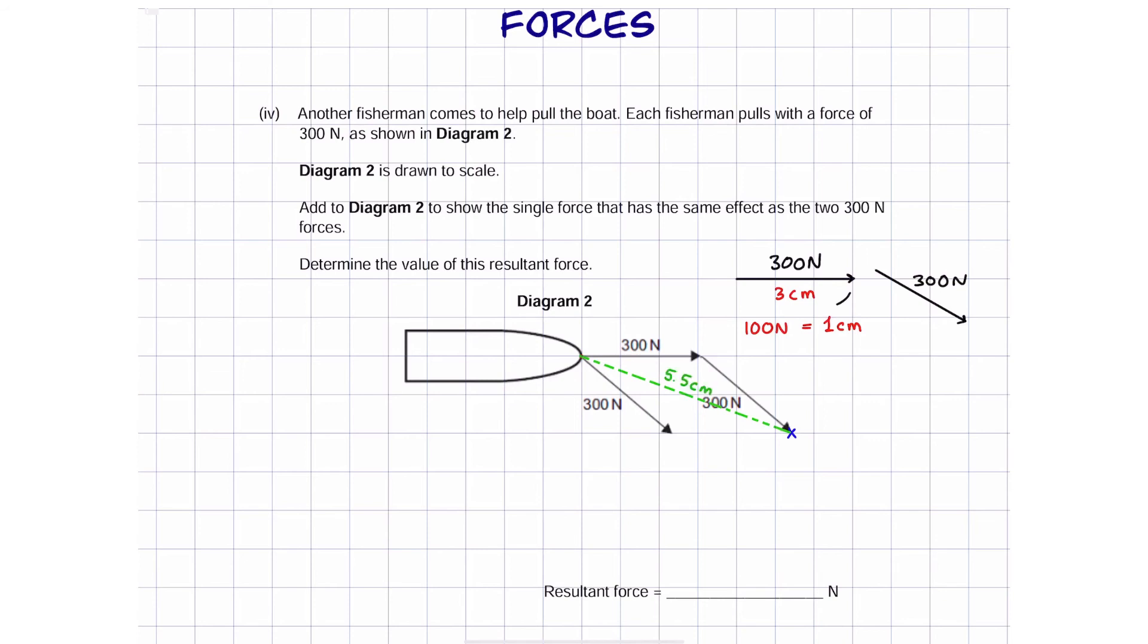If we measure our green line, that's roughly 5.5 centimeters. So according to our scale, 5.5 centimeters must be equal to 550 Newtons, and that's the answer for the overall force.